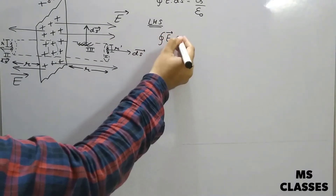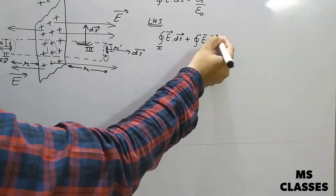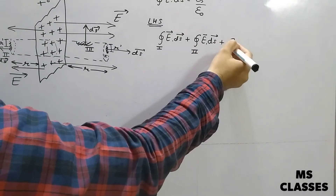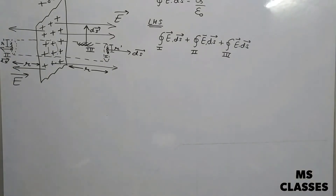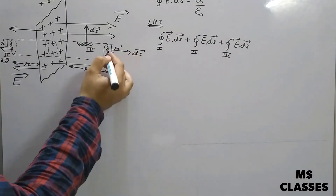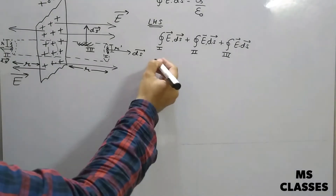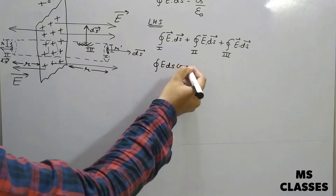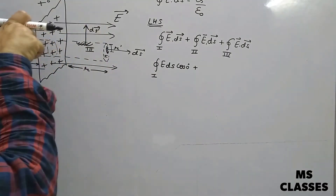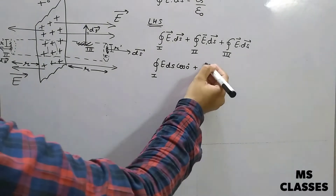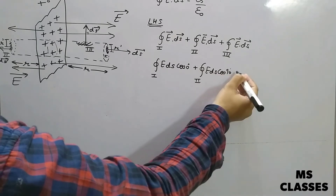The total flux is the flux for the first surface area plus the flux for the second surface area plus the flux for the third surface area. For the first surface, the ds vector is radially outward and the electric field lines are along the same direction, so we get E·ds·cos 0° for the first. Similarly, E·ds·cos 0° for the third.